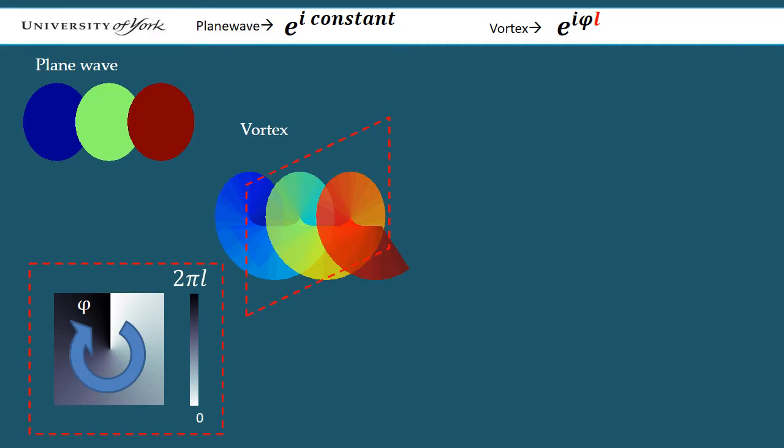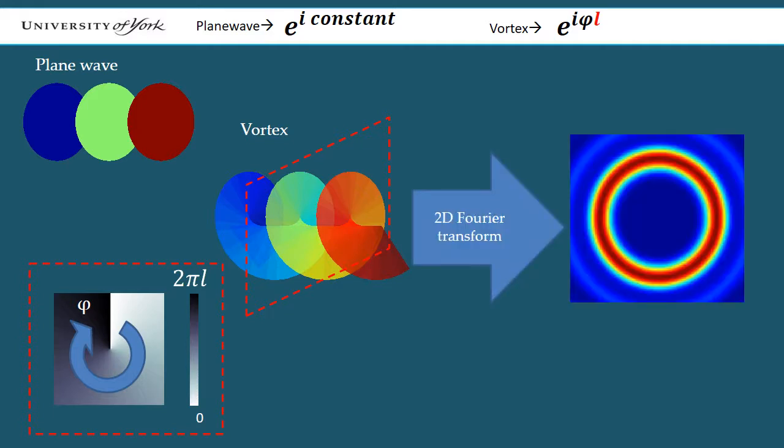The presence of such phase singularities is what gives the C-shaped beam's orbital angular momentum. Taking the Fourier transform of a vortex phase distribution gives a field which has a spiral wavefront and an intensity distribution forming a ring. This can be achieved by using a lens to focus the vortex phase onto its focal plane.